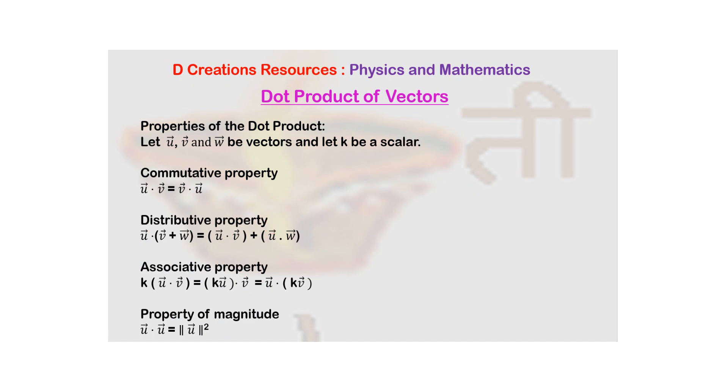Similarly, there is distributive property. So if you add these two vectors, V bar plus W bar, and then if you take dot product of U bar with this addition, it is U bar dot V bar plus U bar dot W bar.